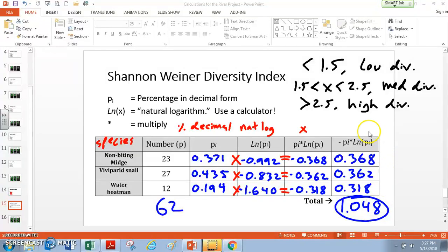Now the way that the Shannon-Weiner diversity index works is that if it's less than 1.5, that's a very low diversity. If it's between 1.5 and 2.5, that's sort of a medium diversity. And if it's greater than 2.5, then that's a high diversity. So since I'm sitting at 1.048, that's less than this 1.5, so pretty low diversity. So this is the idea behind how to calculate a Shannon-Weiner diversity index.